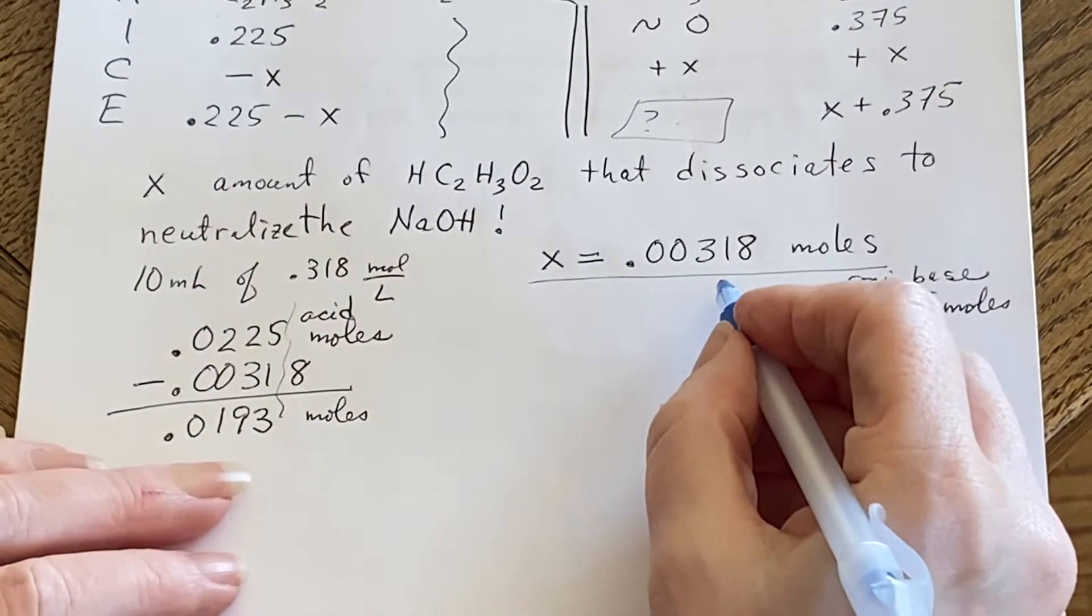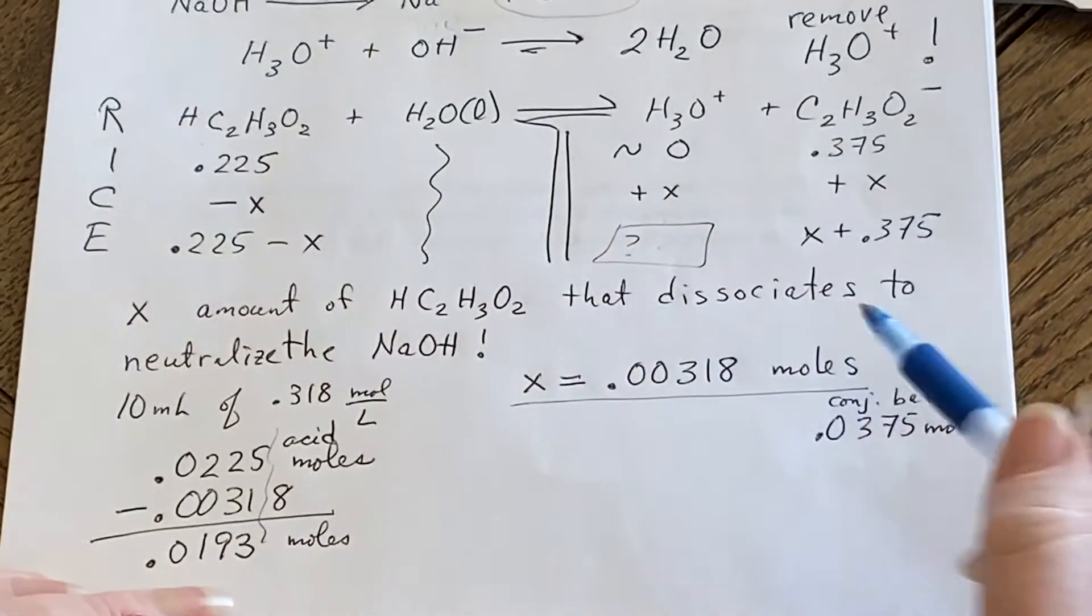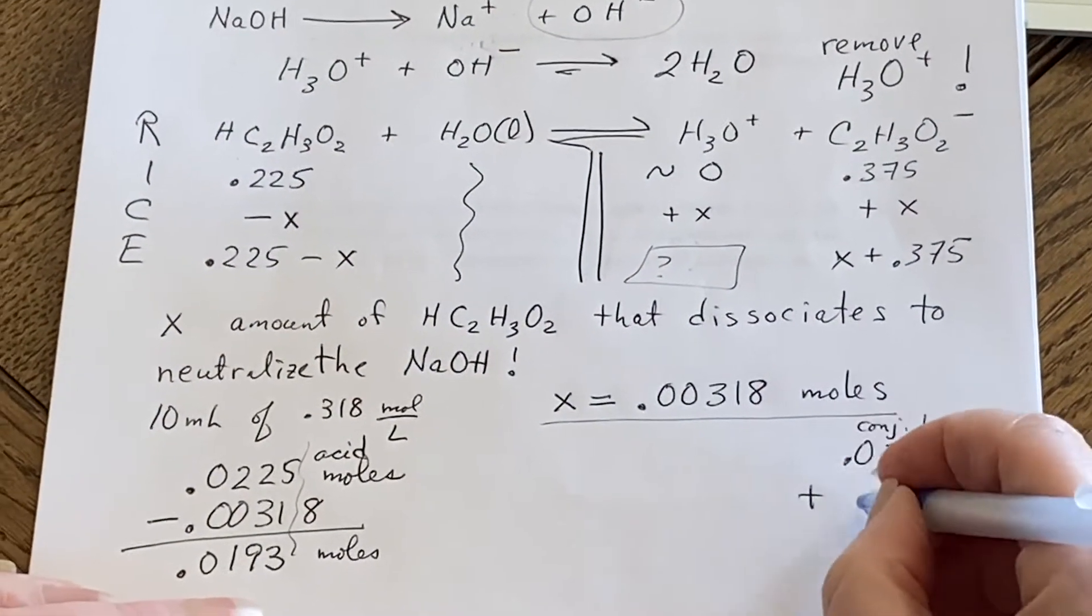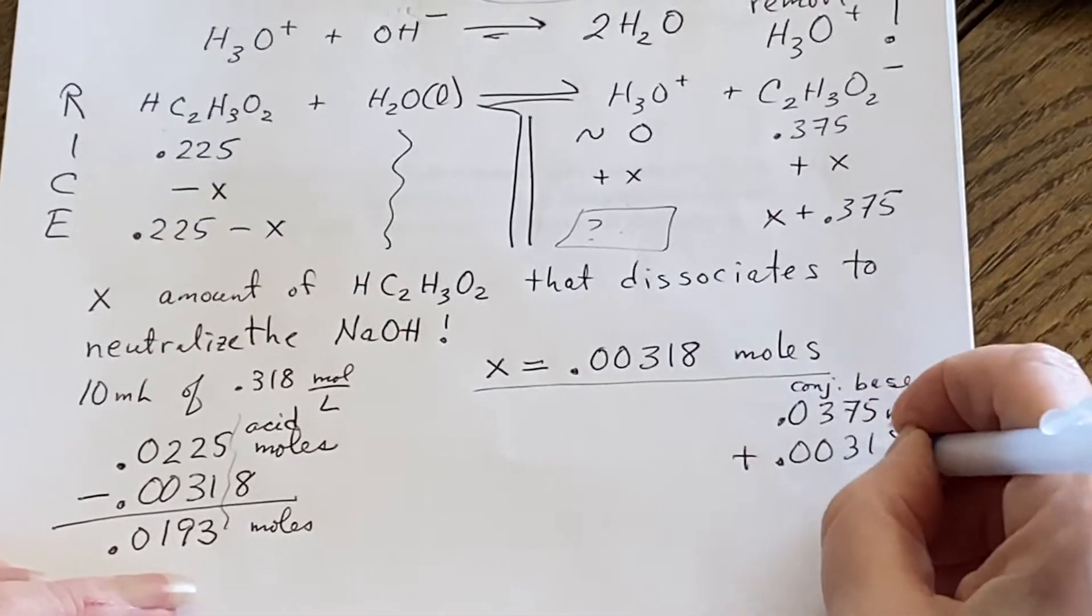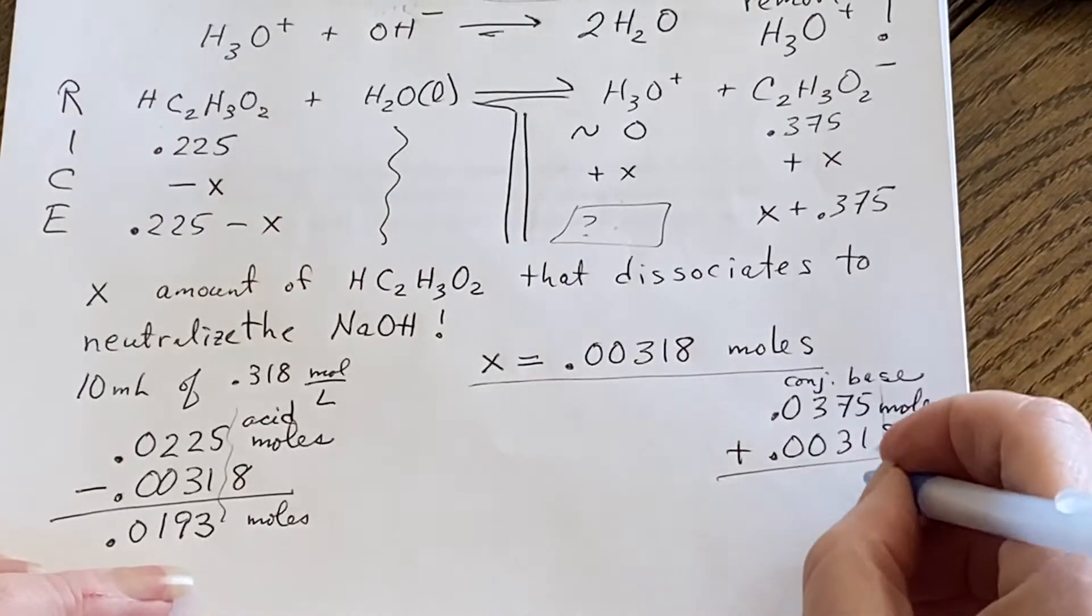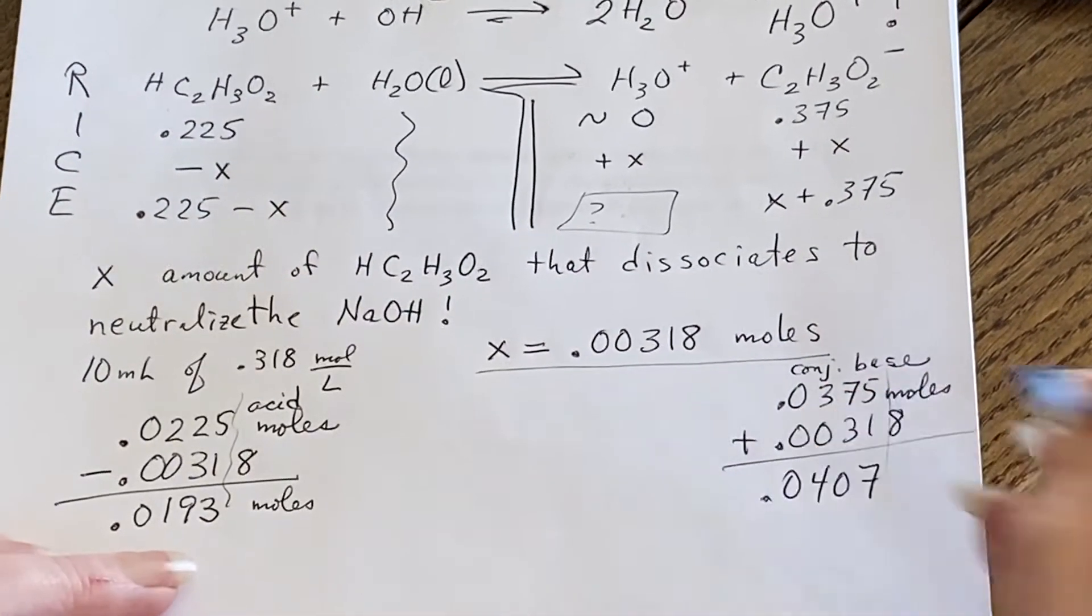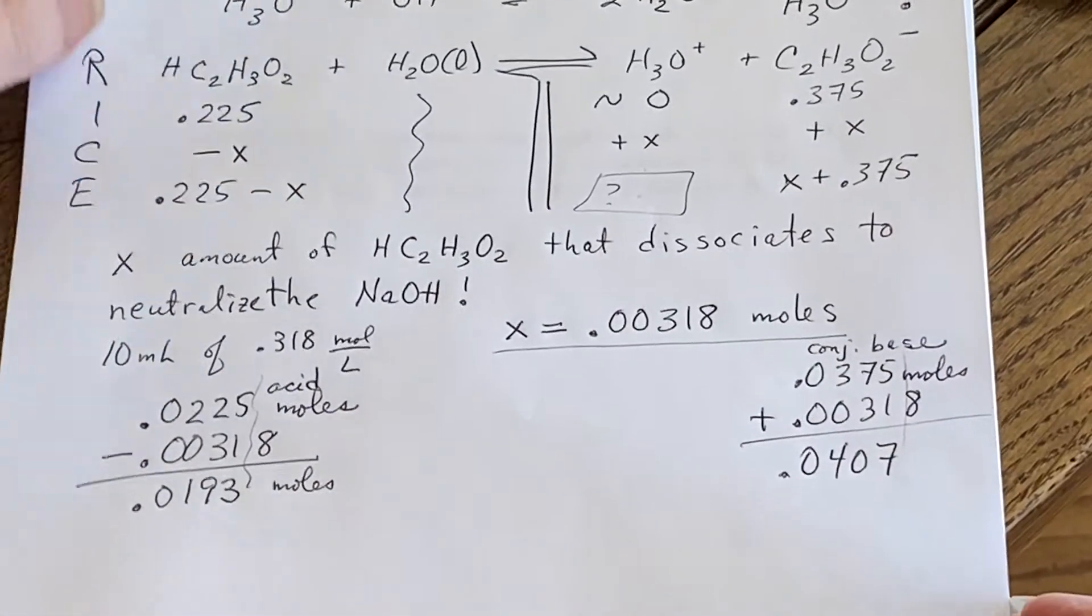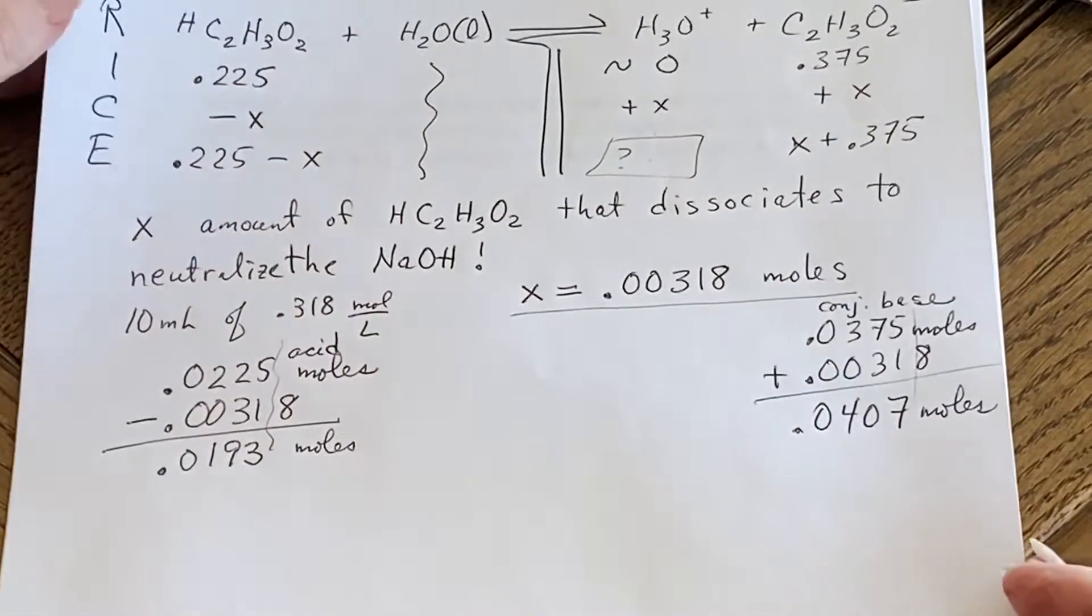And over here, well, this was a plus x. So I will be adding to this the 0.00318 moles. And because of sig figs, I'll end up with this number of moles.